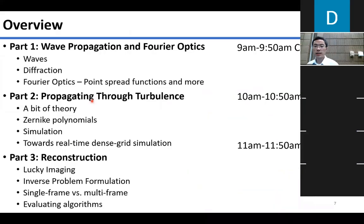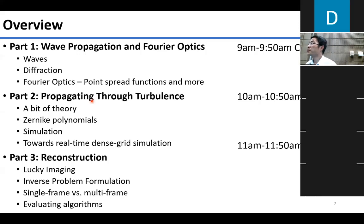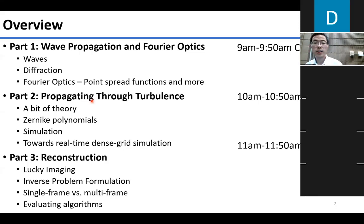The presentation has three parts. Part one covers wave optics, wave propagation, and some Fourier optics, followed by a break. After the break, part two covers turbulence physics and how images are formed as you see through turbulence. Part three covers image restoration methods — how we recover images degraded by turbulence.